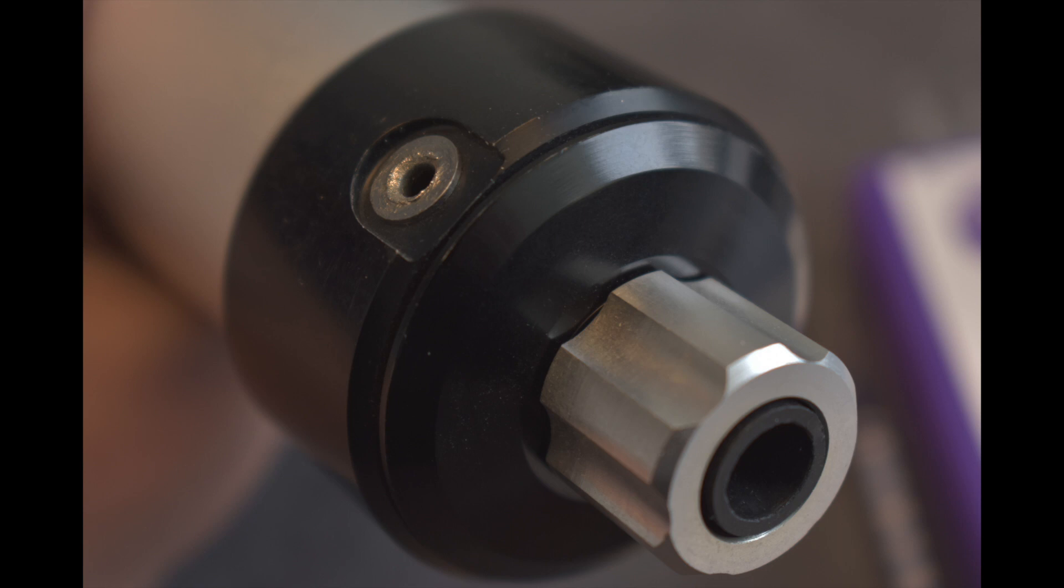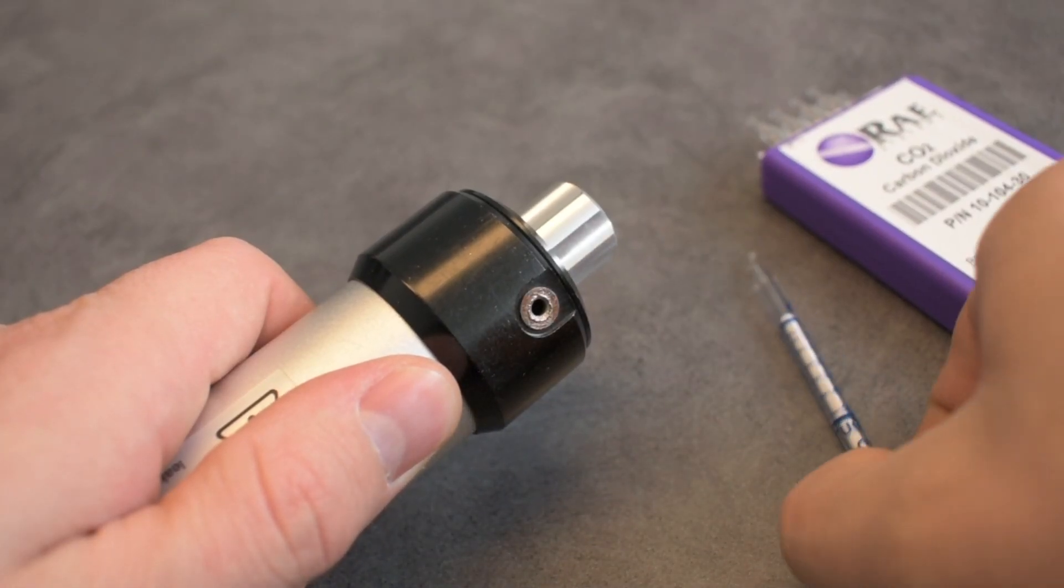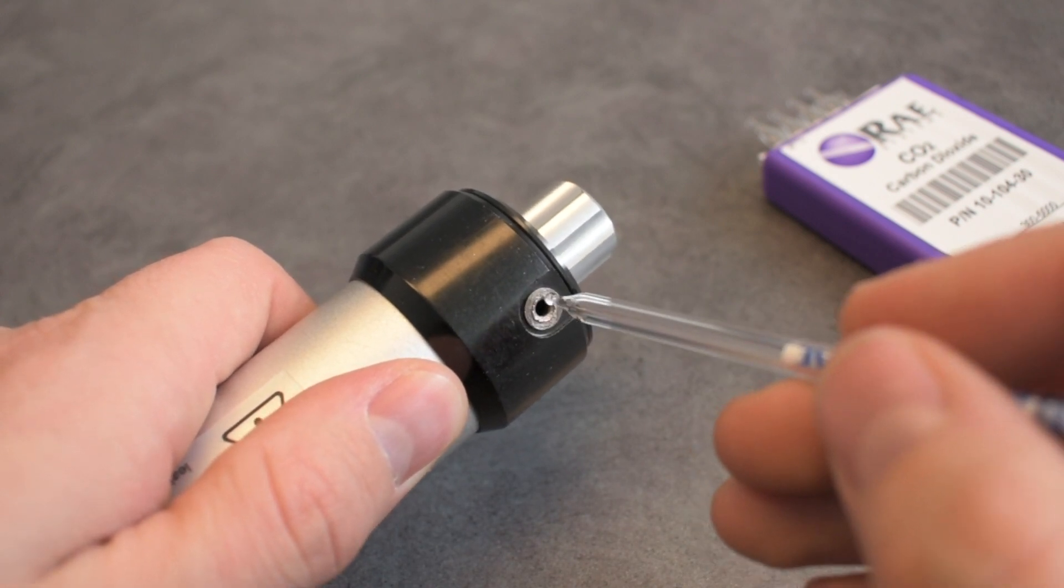The hole located on the side of the pump near the inlet is the tube breaker. Place each end of the tube into this hole and break the tips off.